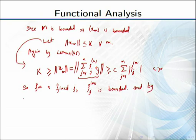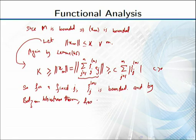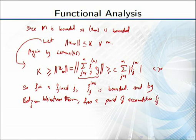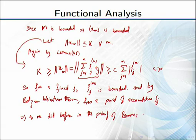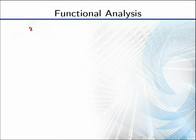By the Bolzano-Weierstrass theorem, this bounded sequence of coefficients has a point of accumulation, meaning the coefficients xi(j) of m converge along a subsequence. As we did before in the proof of Lemma 45, xm has a subsequence.